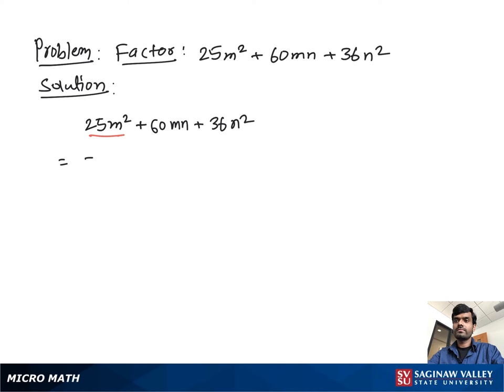So you can write the first as (5m)² and the last term as (6n)².